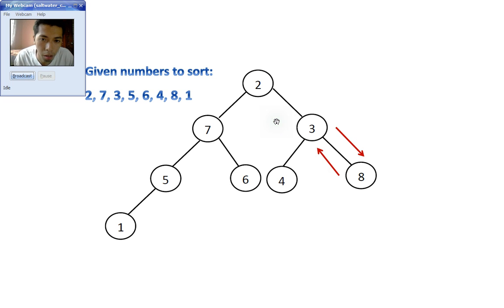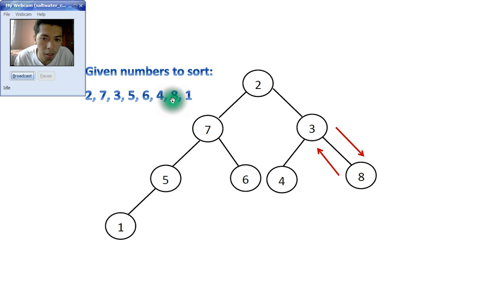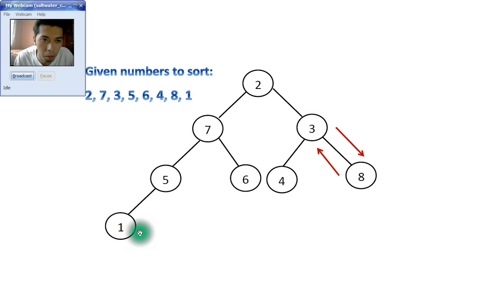To construct a binary tree, the first number 2 is at the top of the tree. The next ones, 7 and 3, are left and right. 5 and 6 are under 7 on the left. 4 and 8 are under 3 on the right. And 1 is at the bottom.